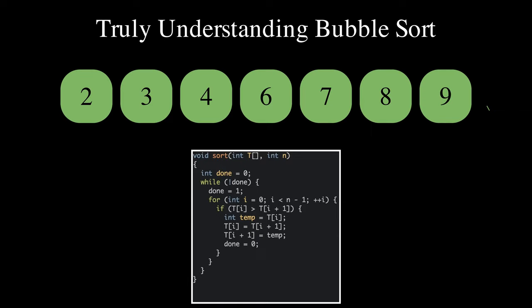The final pass, the nth, simply checks that the elements are now in the right order. As the number of passes is n and each pass takes time theta of n, the overall time complexity in the worst case is theta of n squared.